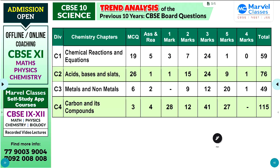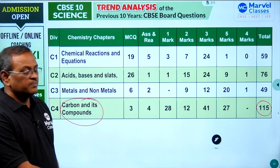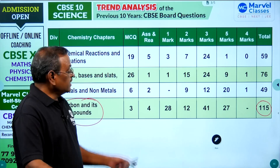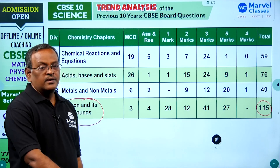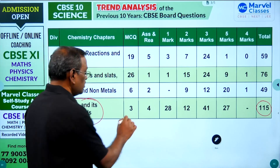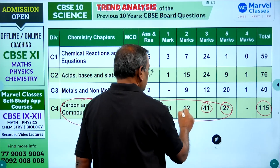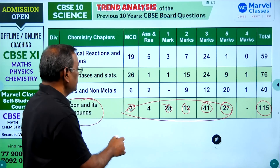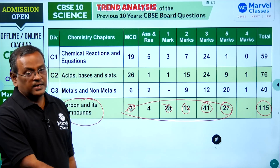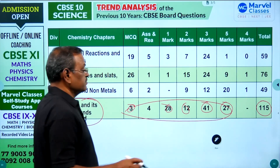In chemistry, the maximum weightage chapter is Carbon and Its Compounds. Marvel Classes is focusing more revision classes on this particular chapter because students are not confident in it, while they are more confident in the other three chapters. Focus on all parts of this chapter — 5-mark, 3-mark, 2-mark, and 1-mark questions — to get full marks.